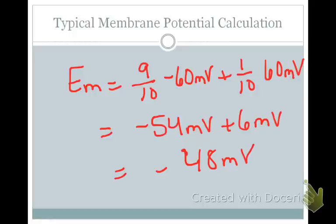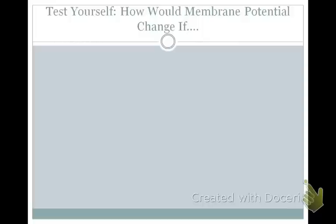That concludes this video on the resting membrane potential. Make sure you test yourself with the online quiz and problem set, and make up your own problems to figure out how membrane potential would change if you altered the starting concentrations of one ion, opened more channels, or introduced different ions. Understanding this forms the basis for the rest of this section.